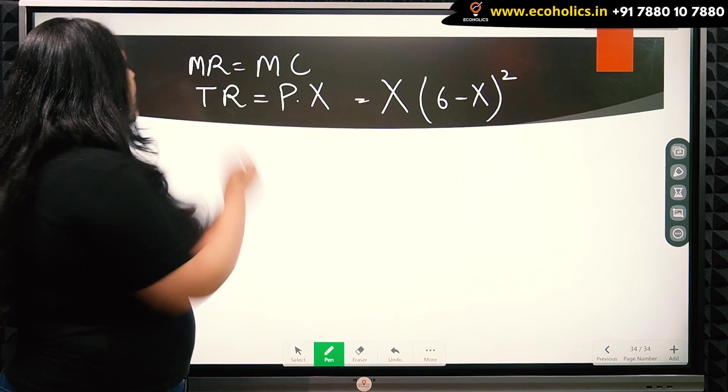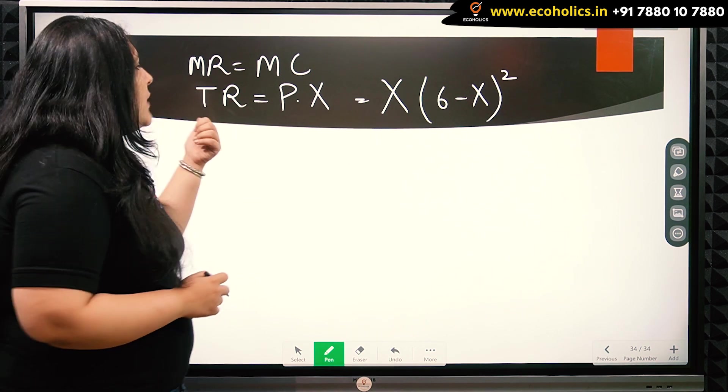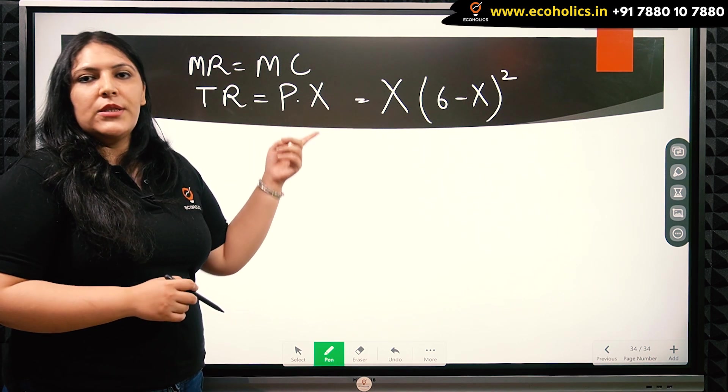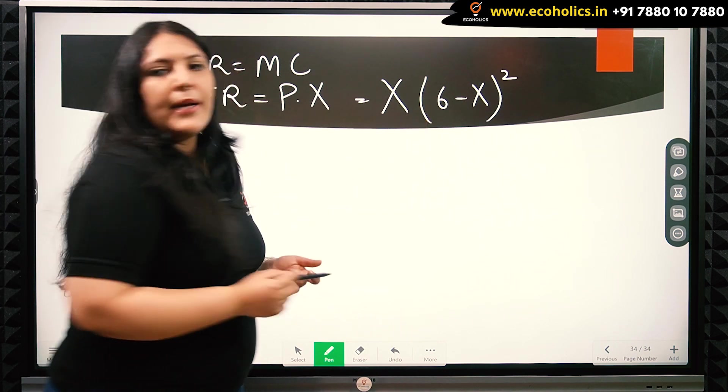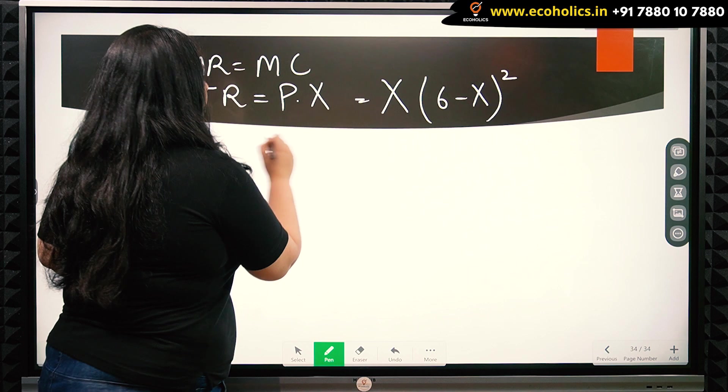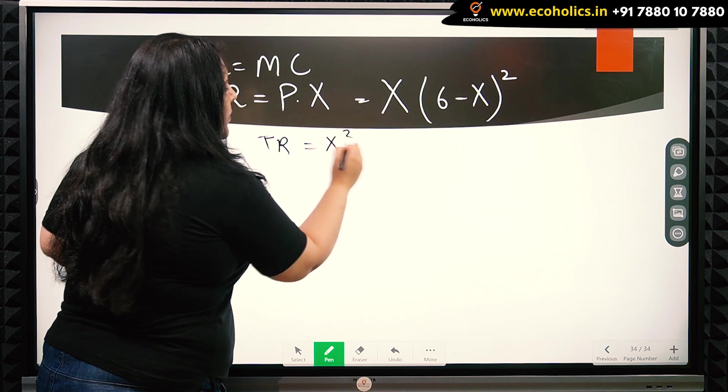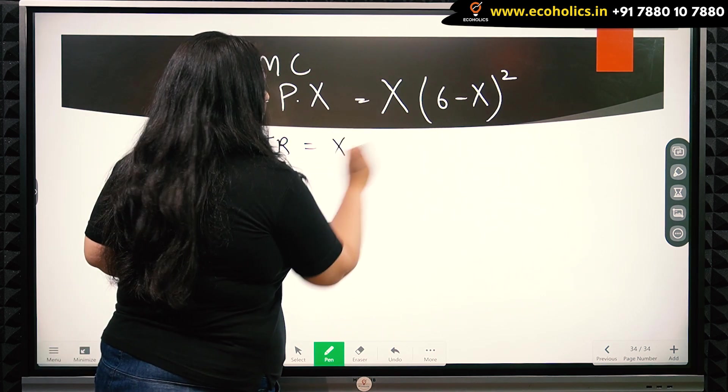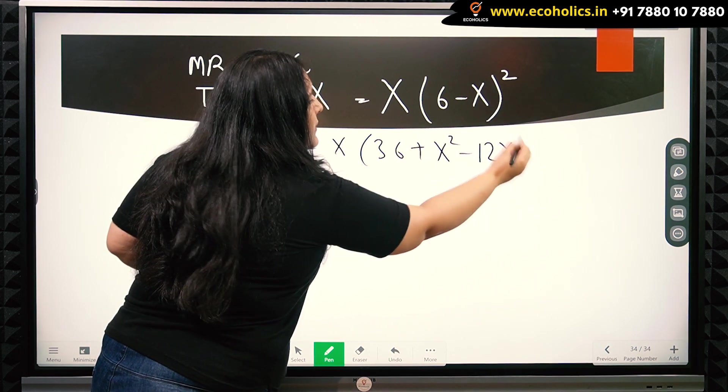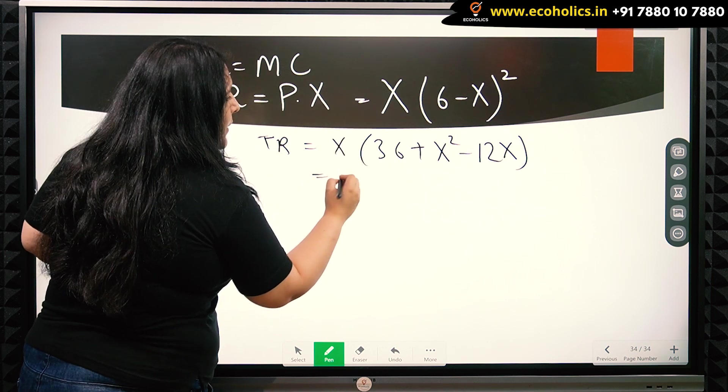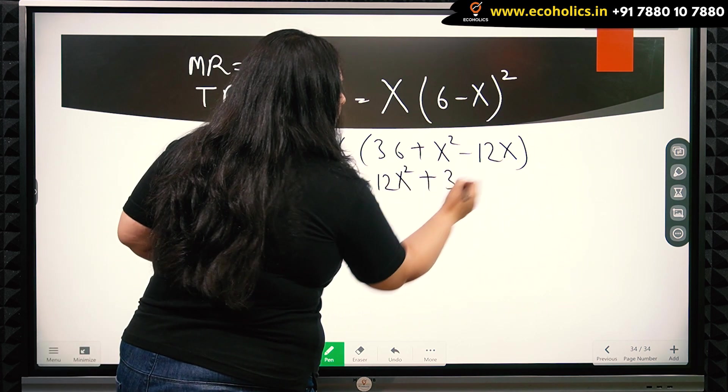So here we have the equilibrium situation where MR must equal MC. But for finding out the MR, we require the total revenue. Total revenue is the price times quantity that is produced by the monopolist. So we have quantity multiplied by the price given in the question. So we get total revenue as x(6-x)². Multiplying it with x, we get x³ - 12x² + 36x.